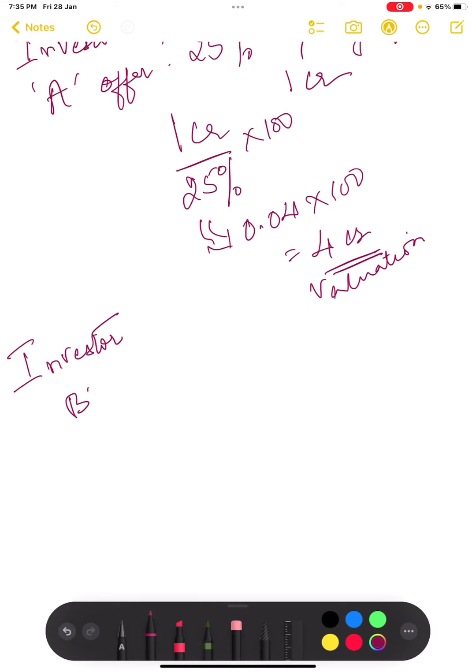Investor B offers 10% equity for 1 crore. So how will you calculate? 1 crore divided by 10% multiplied by 100.